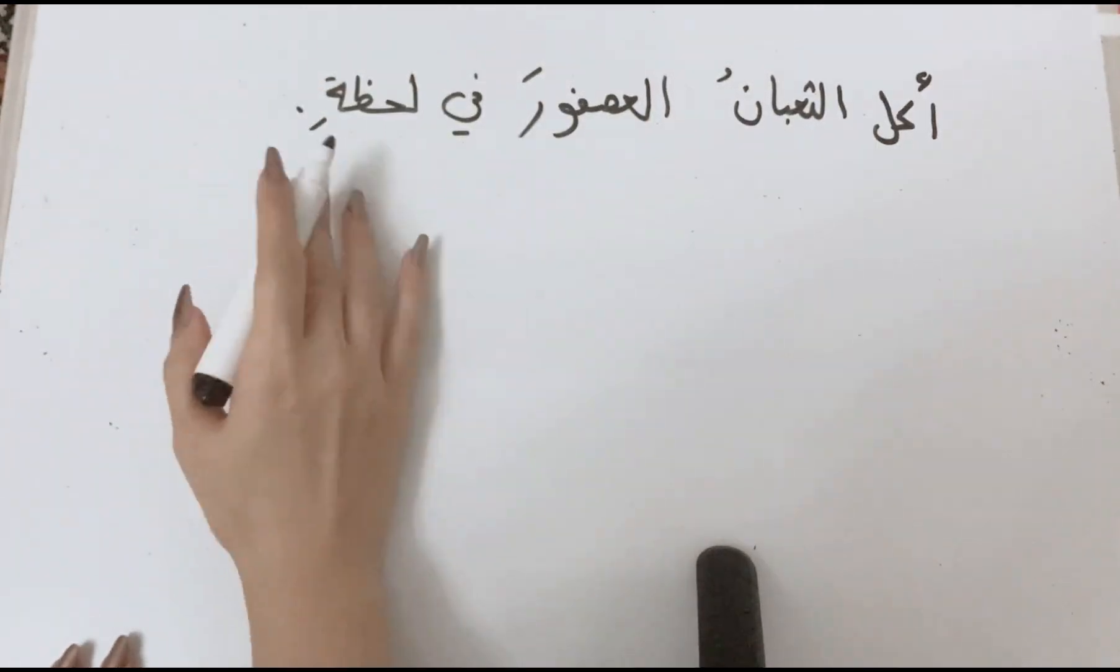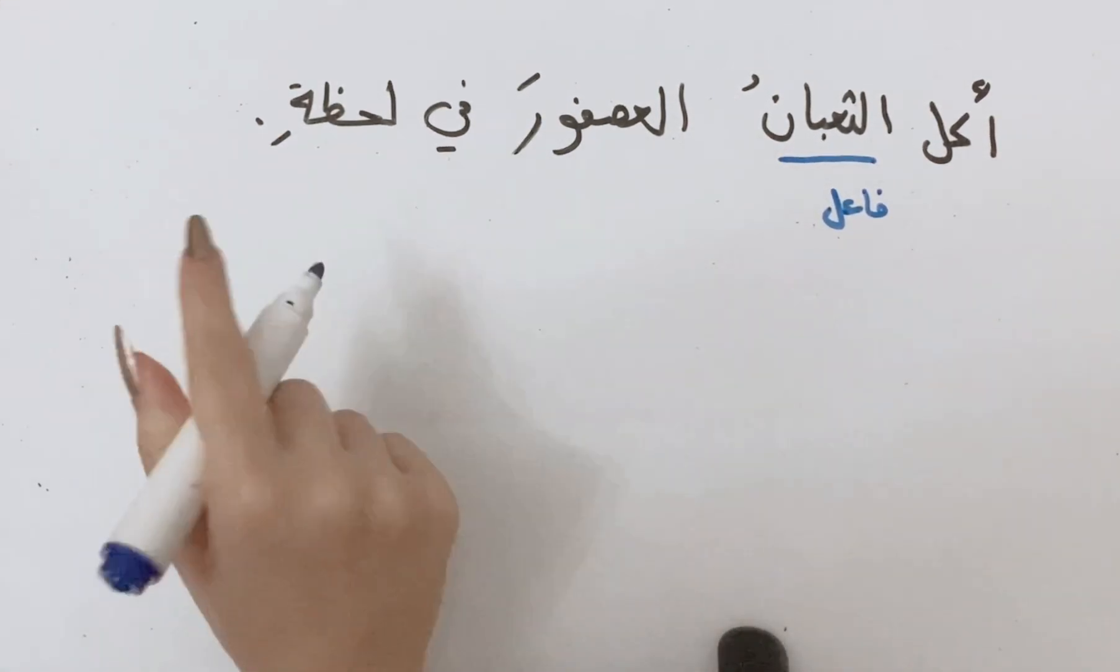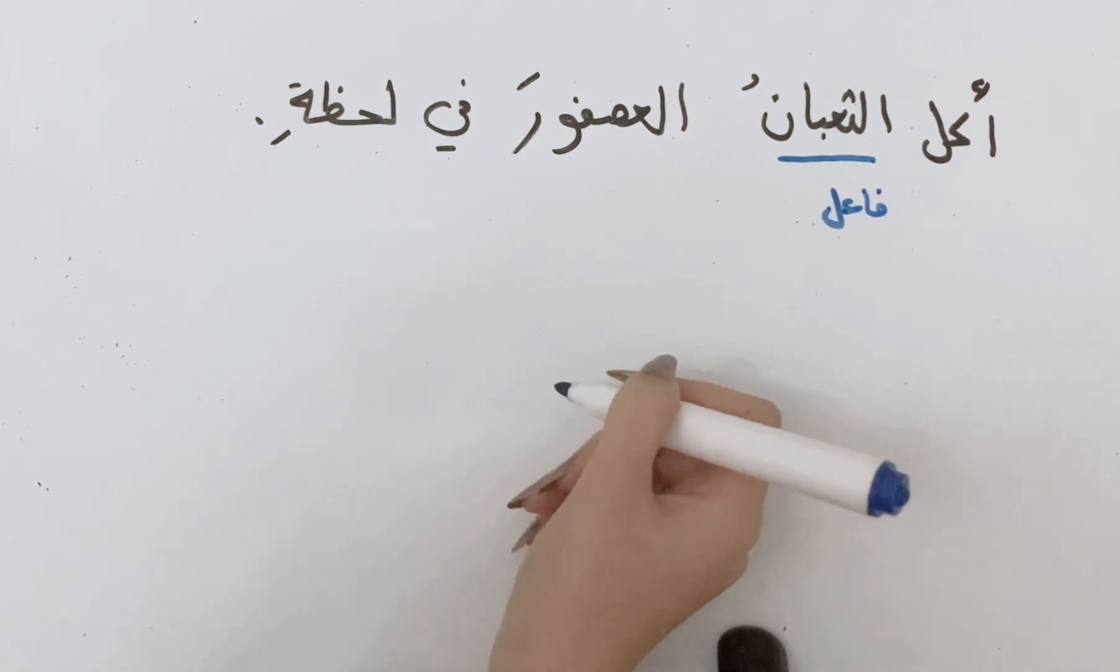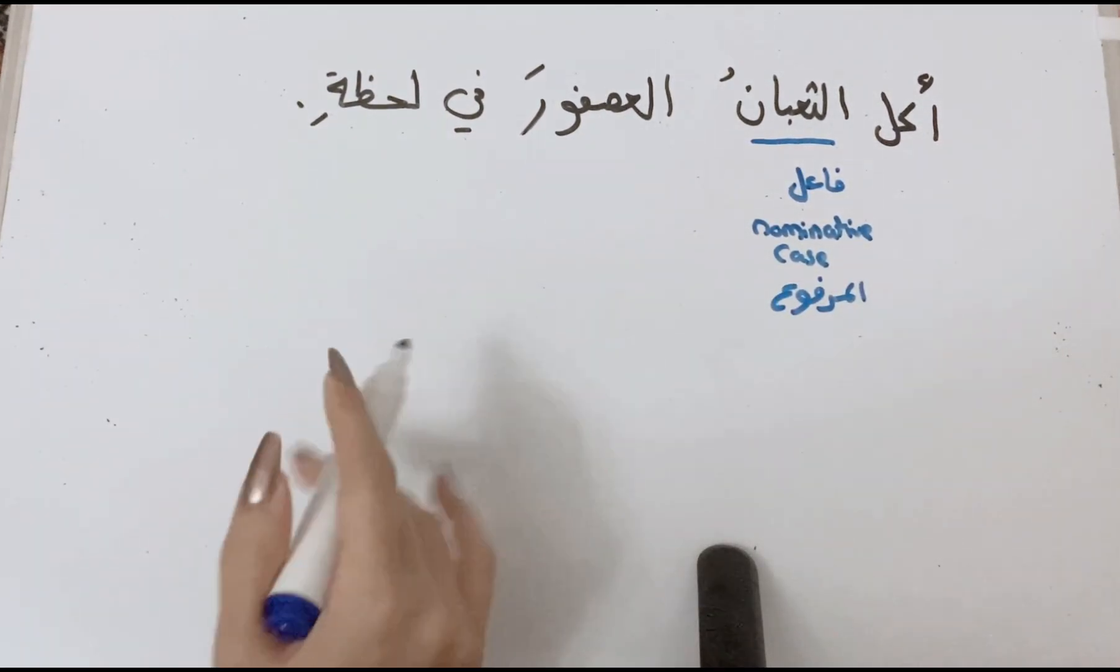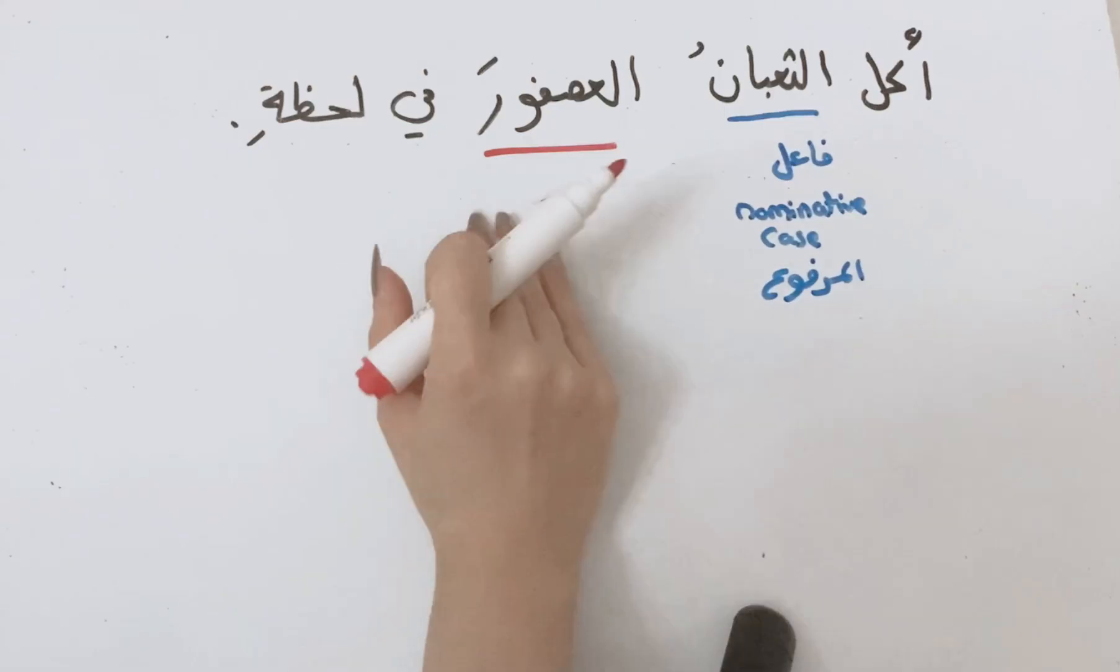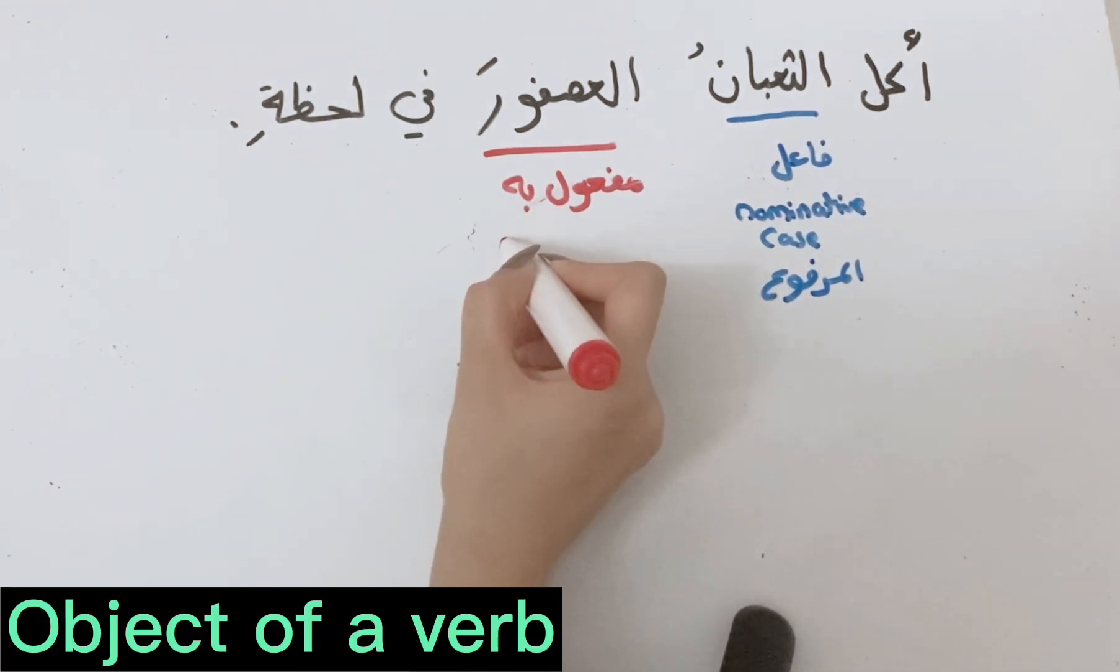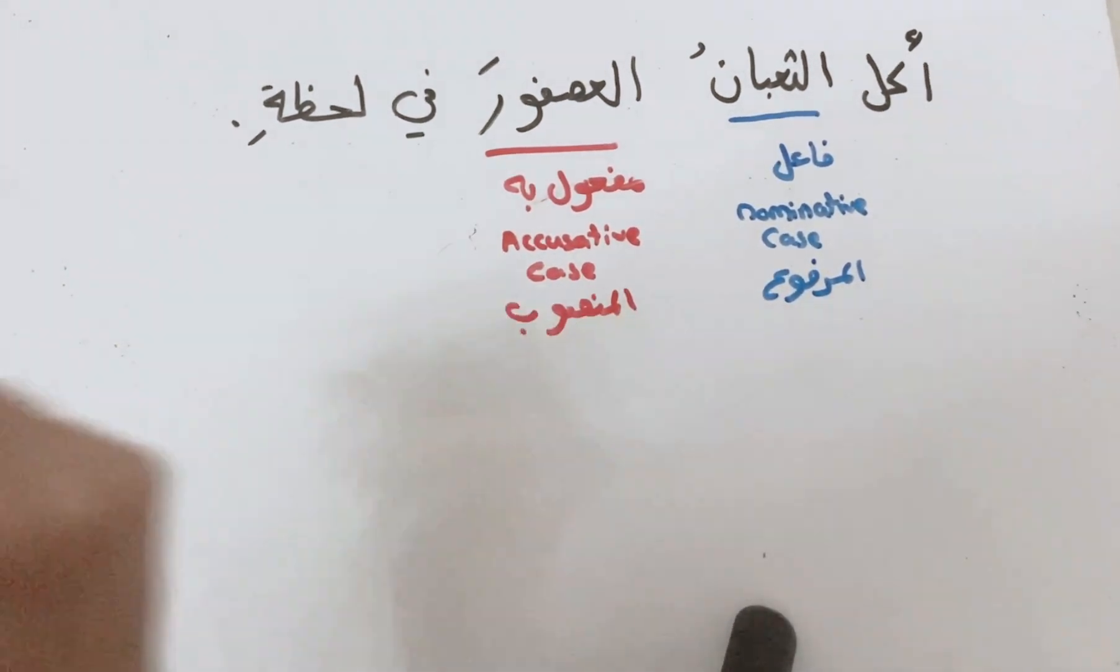We already know that the fa'el is the subject of a verb in English, and the subject of a verb is always going to be the nominative case. And the object of a verb is always the accusative case, the mansoob case.